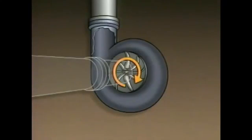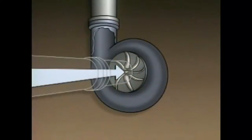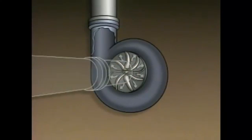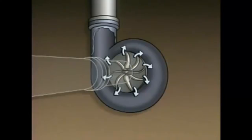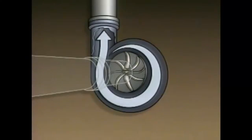As the impeller rotates, gas is drawn in through the suction line to the suction eye. The movement of the gas through the impeller creates a relatively low pressure in the suction eye. This low pressure, in turn, draws more gas into the suction eye. At the discharge vane tips, the gas is traveling at its maximum velocity. From the discharge vane tips, the gas moves into the volute, where it expands and slows down. As the gas slows down, its pressure increases. By the time it reaches the discharge line, it's at its maximum pressure.